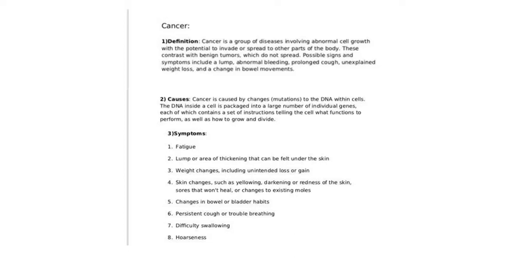The main cause of cancer is changes in the DNA within the cells — we call these changes mutations. Changes in DNA result in cancer. DNA inside the cell contains individual genes, and each gene performs a set of instructions telling the cell what functions to perform and how to grow and divide. The genes help body cells function properly, but mutations in these genes can cause cancer.